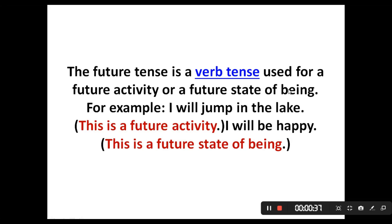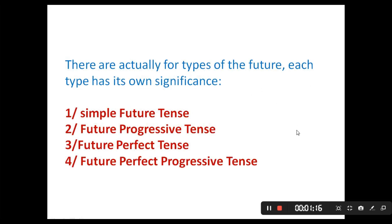For example: 'I will jump in the lake' — this is a future activity because it has an action, like jump, dance, or move. This is really different from a state of being, because in a state of being we express emotions or sensations. For example: 'I will be happy.' This is a state of being because it expresses emotion or sensation.